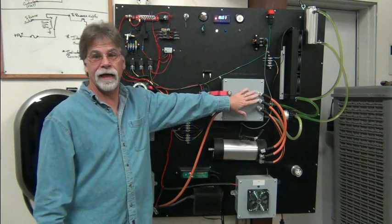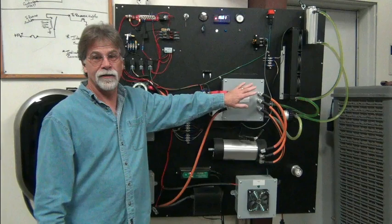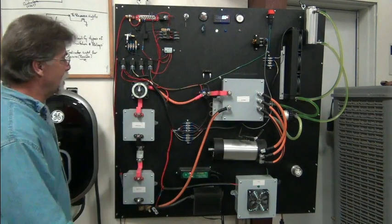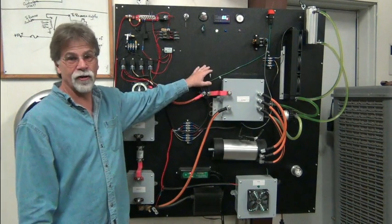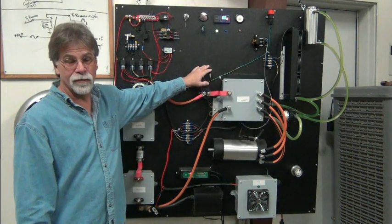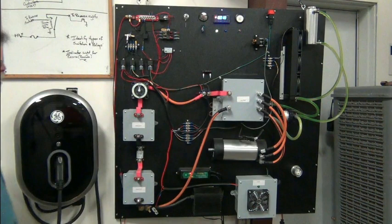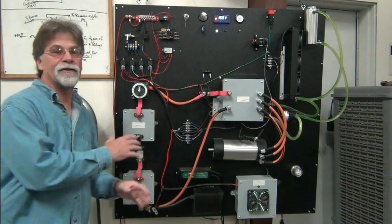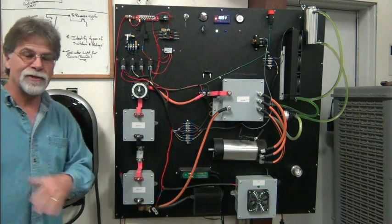Now this is replicating a Curtis 1239 controller. And the 1239 controller has an external pre-charge relay and resistor. And we'll look at that in just a moment. Like I said, we'll get into much greater detail in all this much further down the workshop.